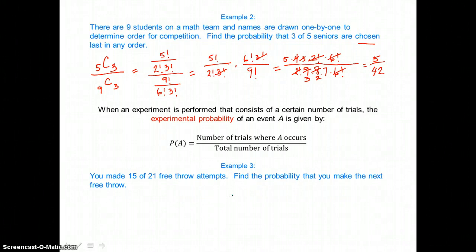When an experiment is performed that consists of a certain number of trials, the experimental probability of an event A is given by this fraction: number of trials where A occurs divided by the total number of trials.